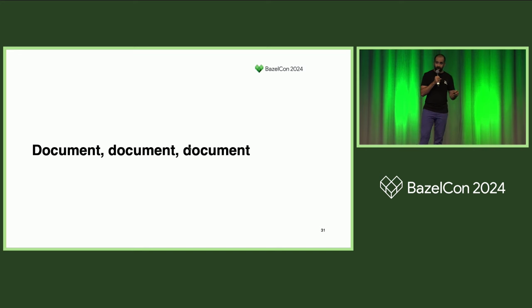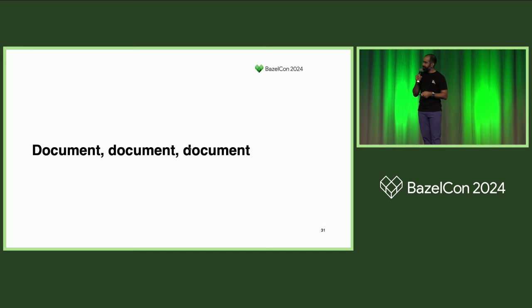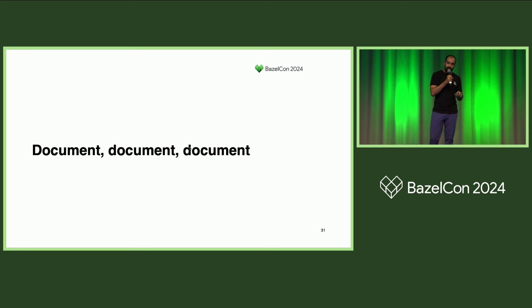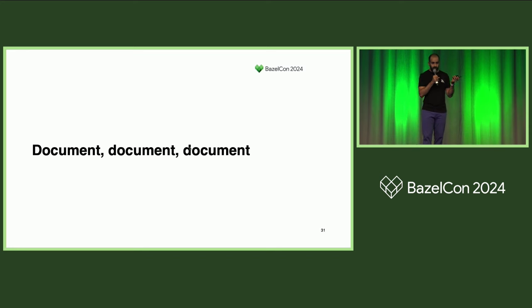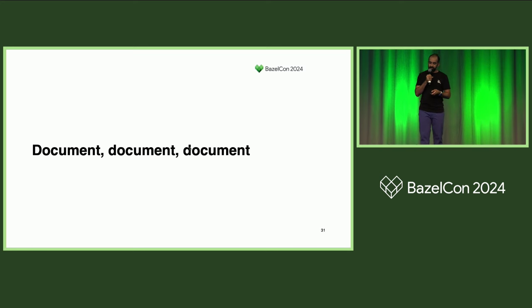Document, document, document — but focus on guides. Build files are pretty readable; you don't really need to onboard people to the syntax. What your team needs are answers to questions like: if I want to make a unit test in Kotlin, how do I know if that should be a JVM test or an Android local test? How do I find the Maven dependency that a particular import comes from? And what is the bootstrapping process for getting a new dependency into the code base?